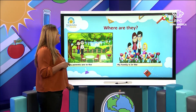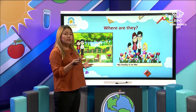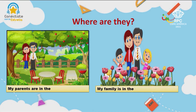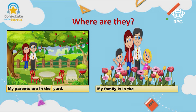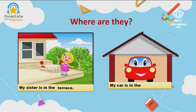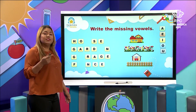Very good. Now that we have reviewed the different members of the family, can you please help me to say where they are? Look at picture number one: my parents are in the yard. Look at the second picture: my family is in the garden. Where is my sister? My sister is in the terrace. And my car is in the garage. In that way, we have learned about four new external places of the house.